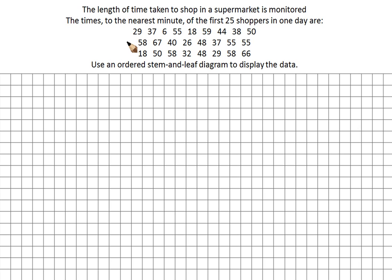So first of all, we need to set our stems out. So our stems are our tens. So we're going to have no tens, one ten, two tens, three, four, five. And we go up to 66, so we're going to need a six as well. Okay, so that's our stem sorted.